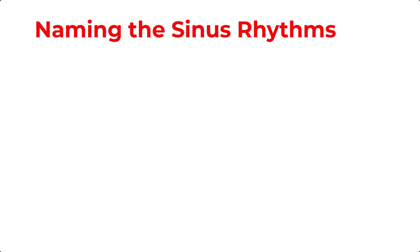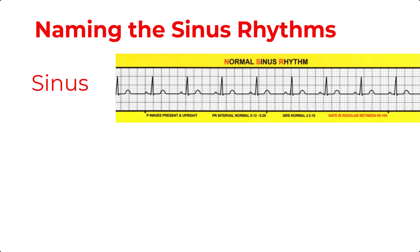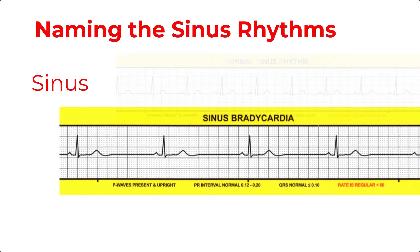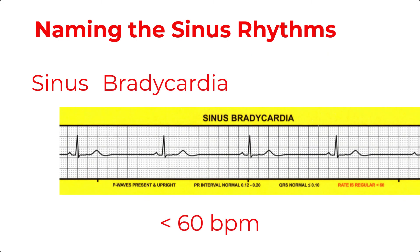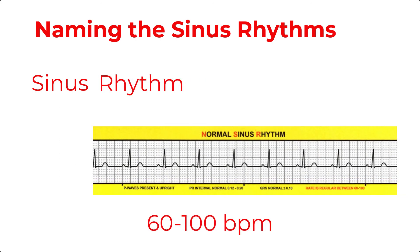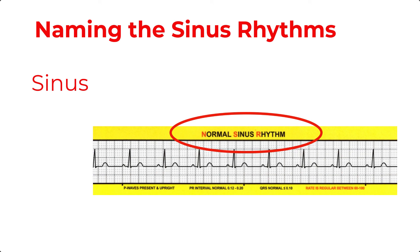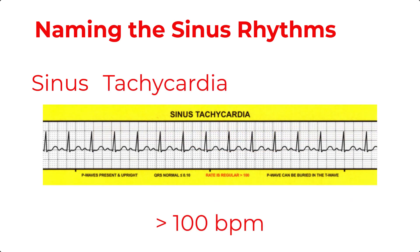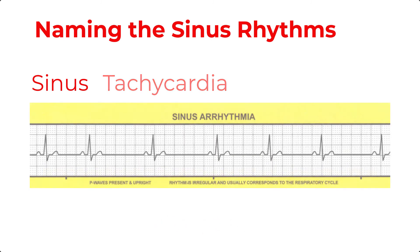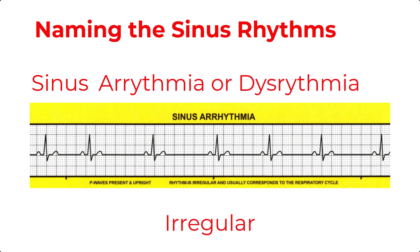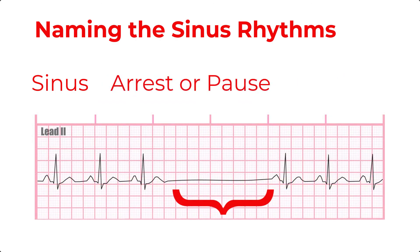To summarize sinus rhythms: we label it as sinus when all the P waves look alike, all the PR intervals match and are between 0.12 and 0.20 seconds. The first name is sinus and the last name is based on what else we find. If it's slower than 60, we call it a sinus bradycardia. If it's 60 to 100, we call it a sinus rhythm or normal sinus rhythm. If it's greater than 100, we call it a sinus tachycardia. If it's irregular, we call it a sinus dysrhythmia. And if the SA node just doesn't fire sometimes, we call it a sinus pause or a sinus arrest.